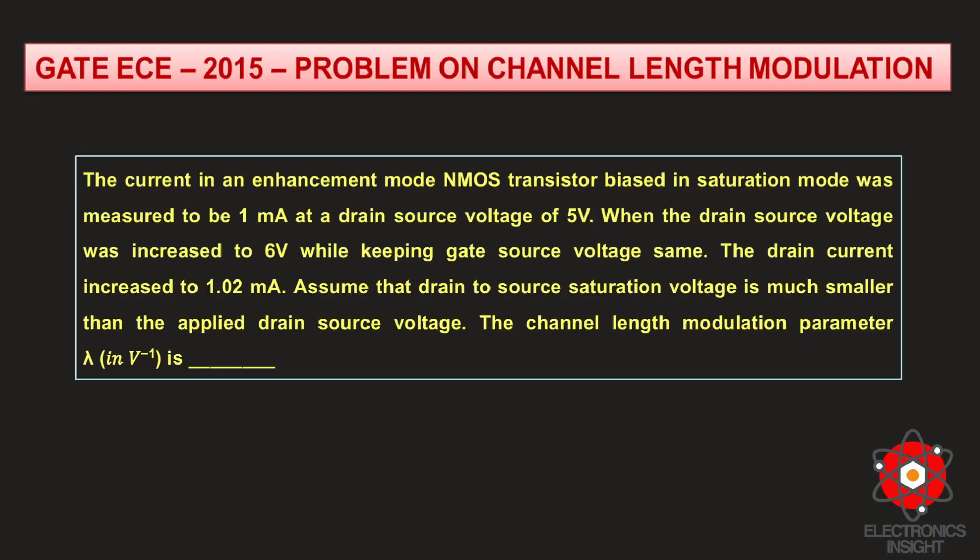First, let us understand the problem statement on channel length modulation. The current in an enhancement mode NMOS transistor biased in saturation mode was measured to be 1 milliamp at a drain-to-source voltage of 5 volts. When the drain-to-source voltage was increased to 6 volts while keeping the same gate-to-source voltage, the drain current increased to 1.02 milliamps.